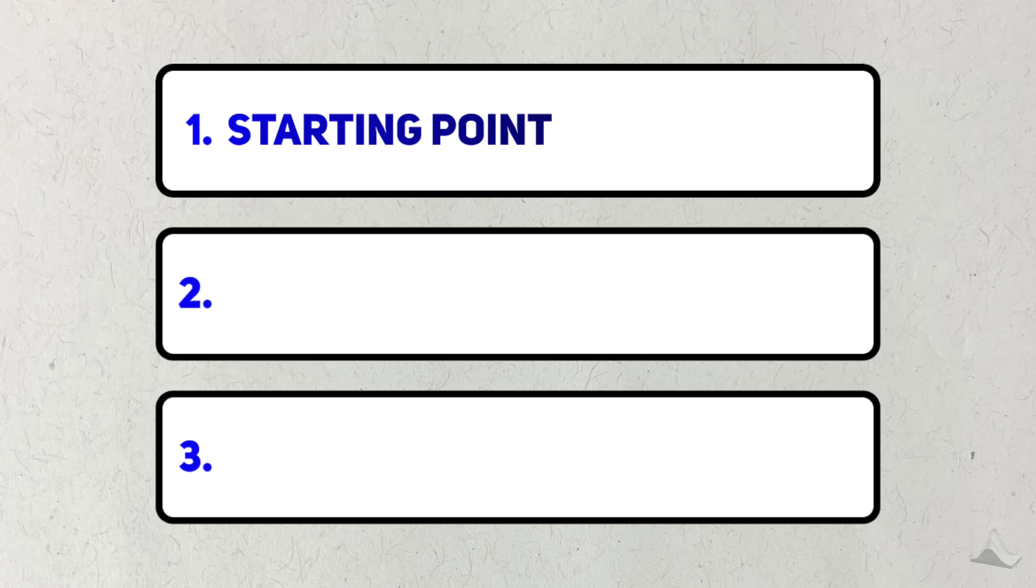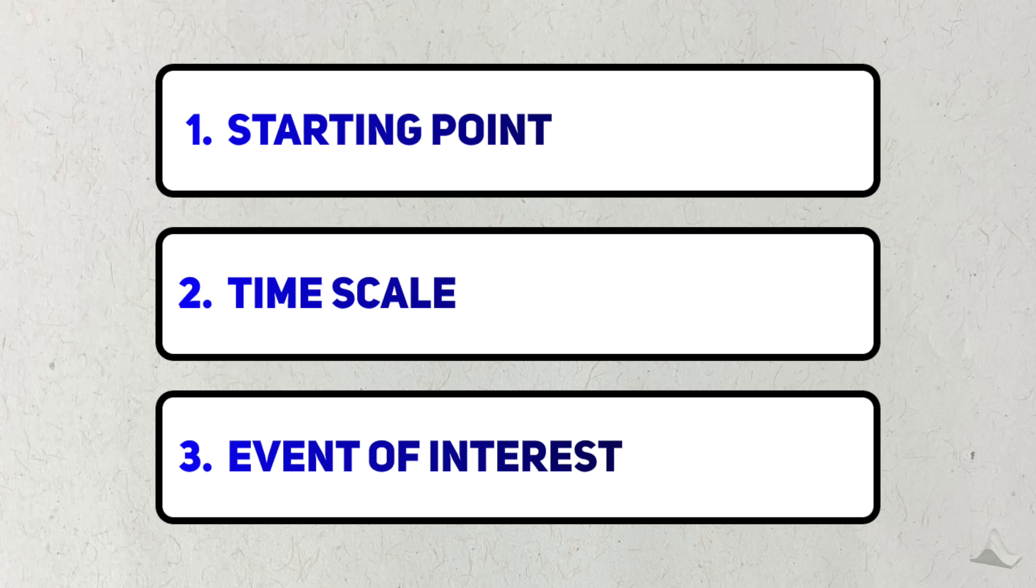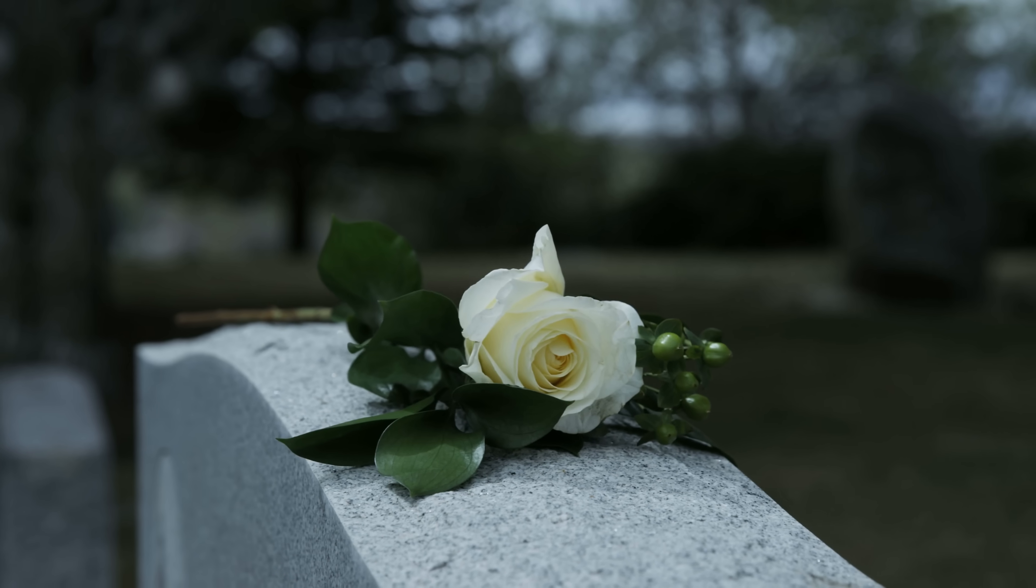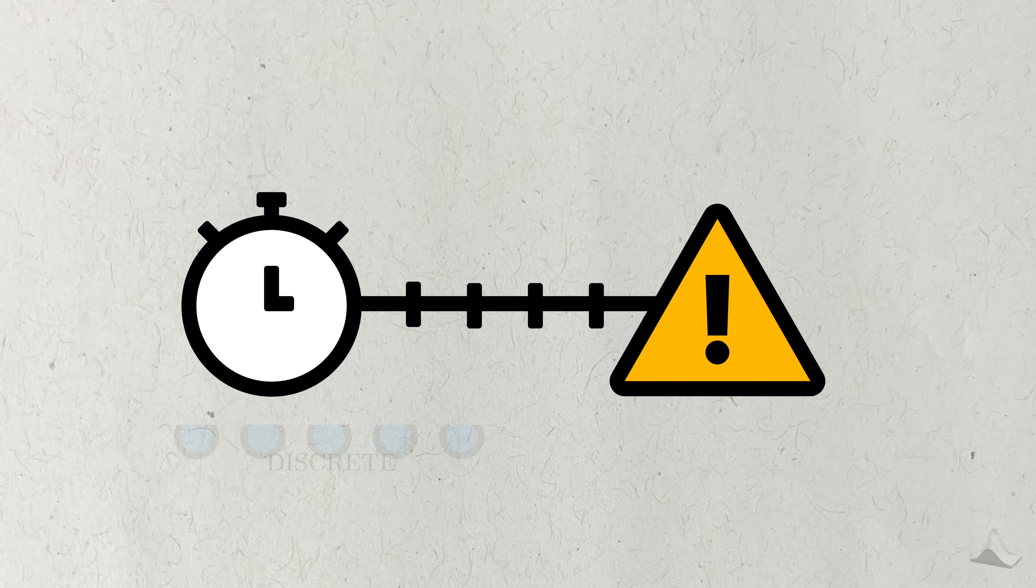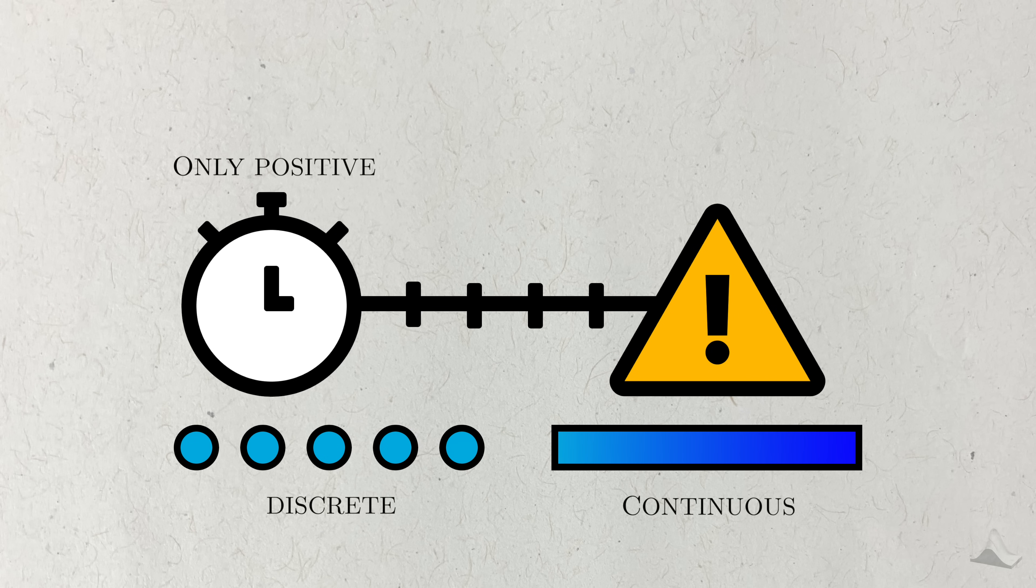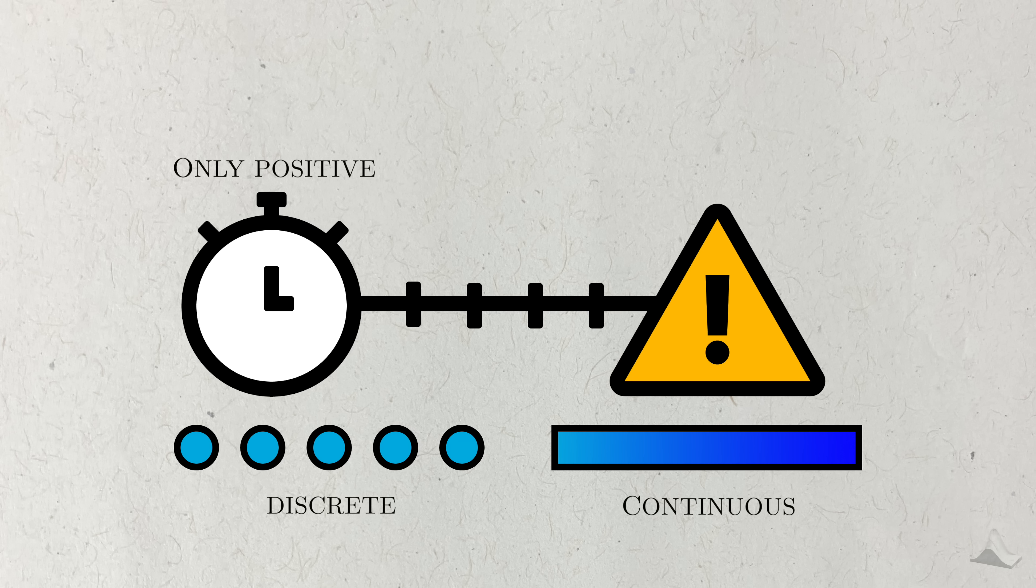One, a time origin, where we start measuring time. Two, a time scale that we measure time in, like days or years. And we need to define a specific event where we stop measuring time. This event could be death, or something like the length of a hospital stay. Time to event can either be discrete or continuous, but it can only be positive. There's no such thing as negative time in statistics.